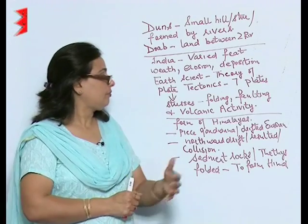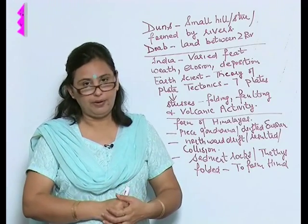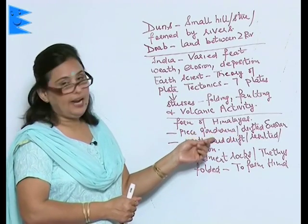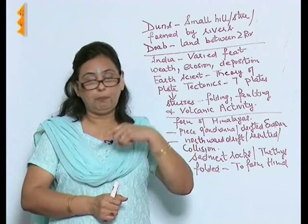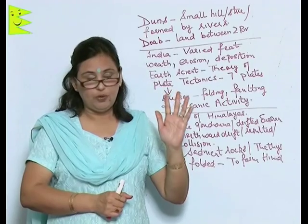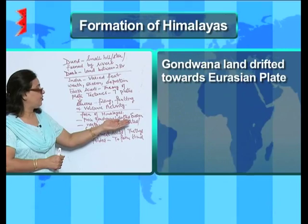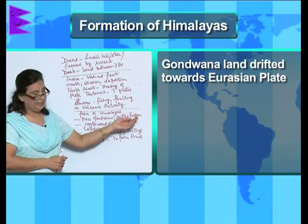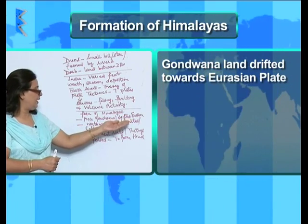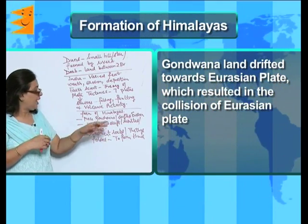We must also understand how the Himalayas were formed. As far as the Himalayas are concerned, it is said that there was a huge landmass called Gondwana land — a supercontinent — and it started drifting northward towards the Eurasian plate. This northward drift resulted in the collision with the Eurasian plate.